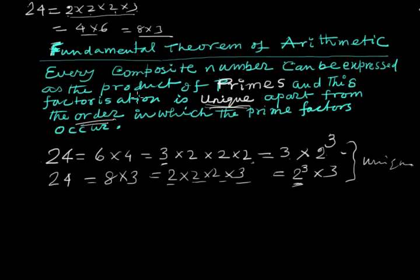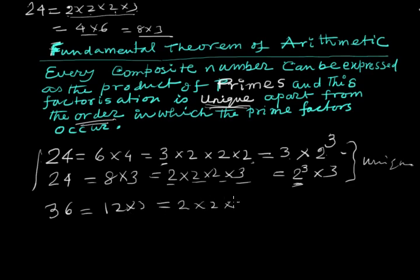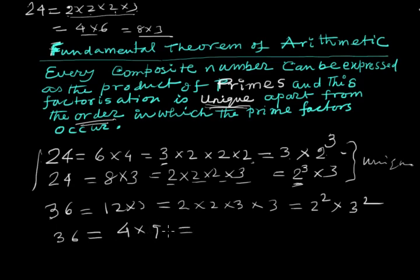This is the Fundamental Theorem of Arithmetic: every composite number can be expressed as a product of primes. For example, 36: starting with 12 × 3, we get 2 × 2 × 2 × 3 × 3, which is 2³ × 3². Another way: 4 × 9 = 2² × 3². Either way, it can be expressed in the form of prime factors.